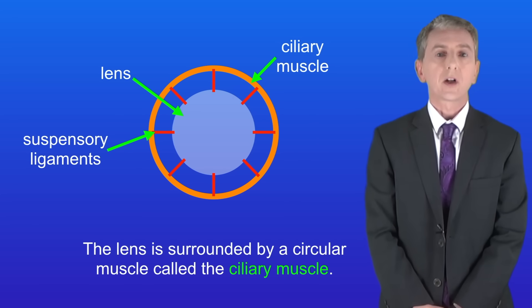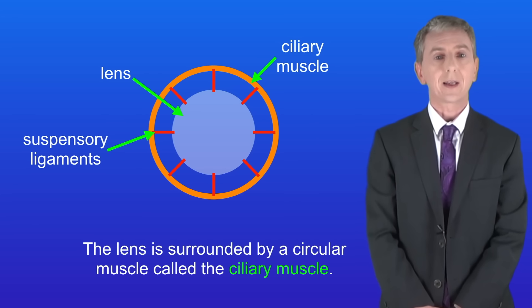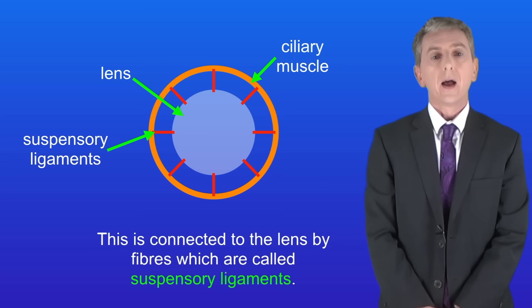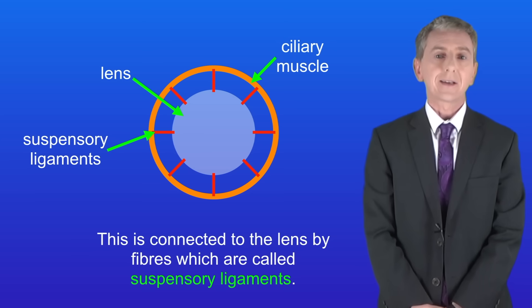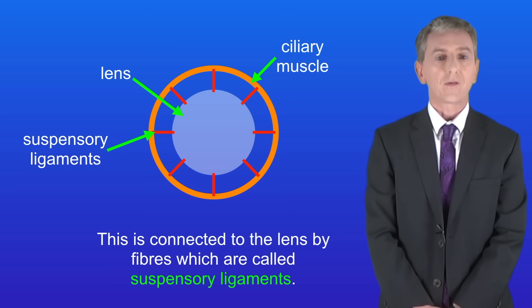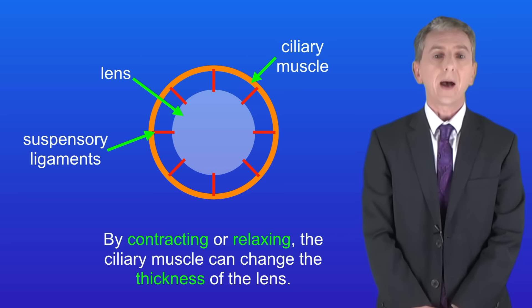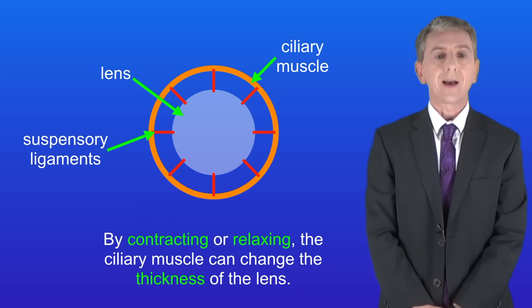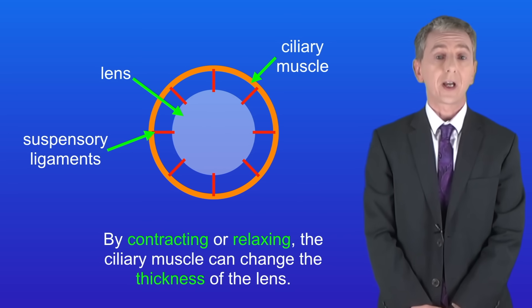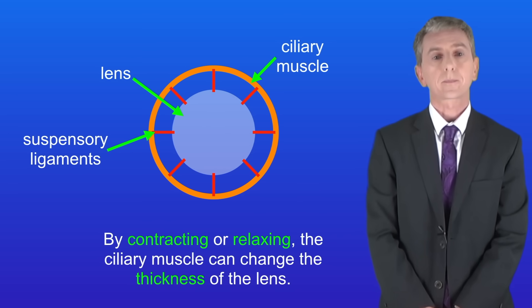The lens is surrounded by a circular muscle called the ciliary muscle, and this is connected to the lens by fibres which are called suspensory ligaments. By contracting or relaxing, the ciliary muscle can change the thickness of the lens.